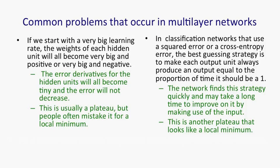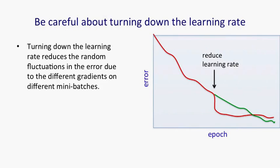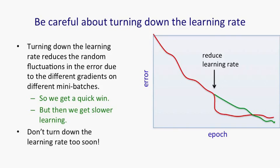I mentioned earlier that towards the end of learning, you should turn down the learning rate. You should also be careful about turning down the learning rate too soon. When you turn down the learning rate, you reduce the random fluctuations in the error due to the different gradients on different mini-batches. But of course, you also reduce the rate of learning. So if you look at the red curve, you see that when we turned the learning rate down, we got a quick win. The error fell. But after that, we get slower learning. And if we do that too soon, we're going to lose relative to the green curve. So don't turn down the learning rate too soon or too much.